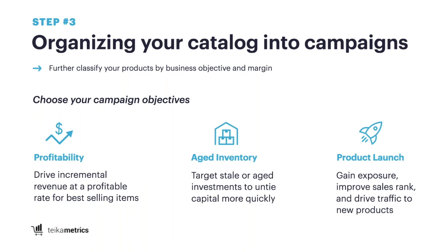Your objective is going to determine how much you're willing to spend. In a product launch, you're going to be much more willing to have a higher ACOS — your advertising cost of sale, which is your spend divided by your sales. Whereas with profitability, you may only want to spend five to ten percent of total sales from sponsored products on advertising. You'd set up a profitability campaign under a product type like tents, and then a separate aged inventory campaign for the same product type. The campaign is the only level at which you can set that budget, so if all products are in a single campaign, you don't have that budget lever to control different objectives.